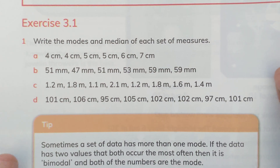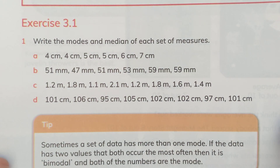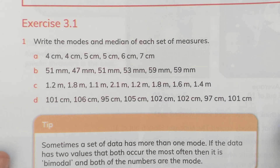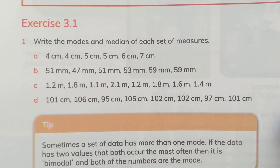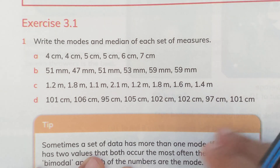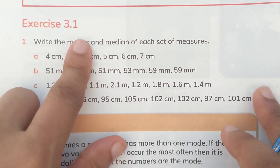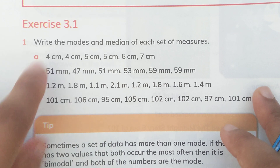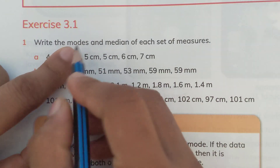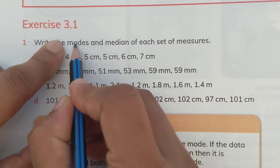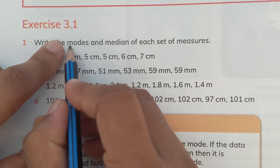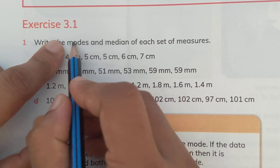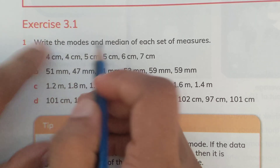Let's start with question number 1 of exercise 3.1 on page number 40, which says: write the modes and median of each set of measures. We have to calculate the mode. Mode is very easy — you can memorize it as 'most repeated value.' Mode is most repeated: M for most, D for repeated value.